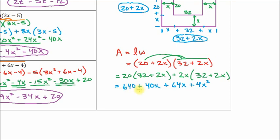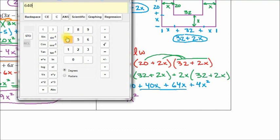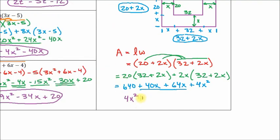We're getting close. Let's look for like terms. 640 is a constant — there's no other constant. We've got 40x and 64x — those are like terms, so combine them: 40 plus 64 is 104, giving us 104x. And we have 4x squared by itself, which cannot be combined. Now I'm going to put the terms in proper order — you want to put the term with the highest exponent first. So we get: 4x squared plus 104x plus 640.